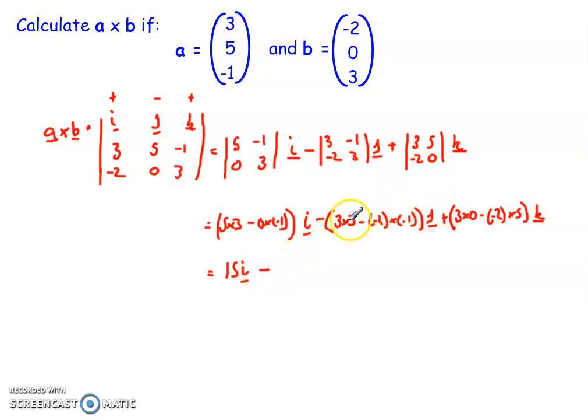Then this one here, I'm going to put take away, I've got 3 times 3, which are 9. I've then got negative 2 times negative 1, negatives cancel, so it's 2. So I've got 9, take away 2, so it's then minus 7j. Then the last one here, 3 times 0, take away negative 2 times 5, so 0 minus, well this is minus 10, so 0 minus minus 10, minus minus becomes a plus, so it then becomes plus 10k.